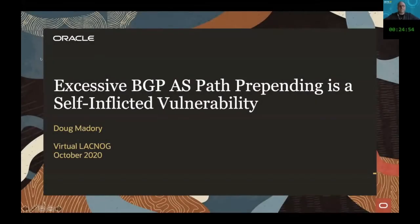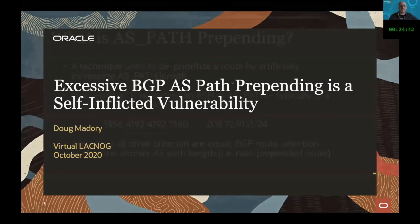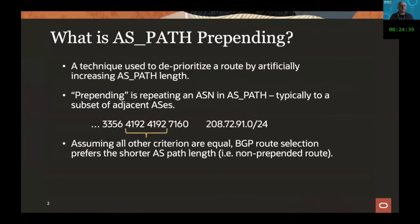Hello everyone. My name is Doug Midori and this is my presentation entitled 'Excessive BGP AS Path Prepending is a Self-Inflicted Vulnerability.' Just to define terms: what is AS Path Prepending? This is a technique used to deprioritize a route by artificially increasing the AS Path length, AS Path being a field in a BGP announcement.